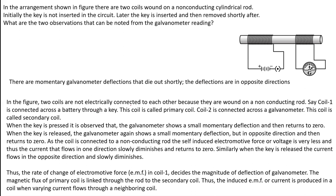In the figure, the two coils are not electrically connected because they are wound on a non-conducting rod. Coil one is the primary coil connected across a battery through a key, and coil two is the secondary coil. When the key is pressed, the galvanometer shows a small deflection and then returns to zero. When the key is released, the galvanometer again shows a momentary deflection but in the opposite direction. This is a pure concept of ways to induce current in a circuit — please go through that concept and learn it. Very, very important question.